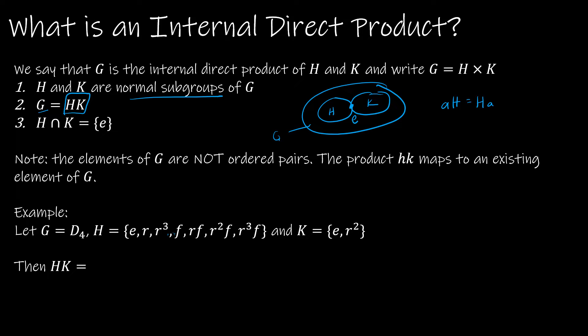So we have to be able to take H times K. So for all elements g within the group G, there exists some unique h in H and k in K such that hk is equal to g. So essentially, we're saying we can multiply those to find every single element of G. The other thing is that the intersection is only the identity.